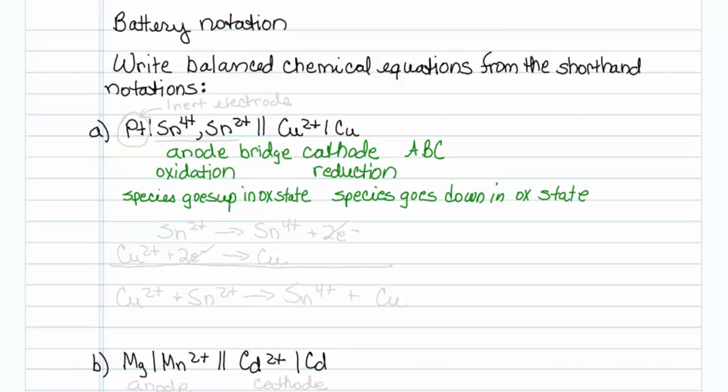I can see pretty clearly that for my first one, platinum is not actually involved in the reaction. This is just an inert electrode. I know that because I've got two aqueous species listed here, tin 4 plus and tin 2 plus. Aqueous things can't be an electrode. You need something solid to be an electrode. So when you do have two aqueous things, you pick something else to be the electrode, and platinum is a good choice because it doesn't usually get involved in redox reactions.